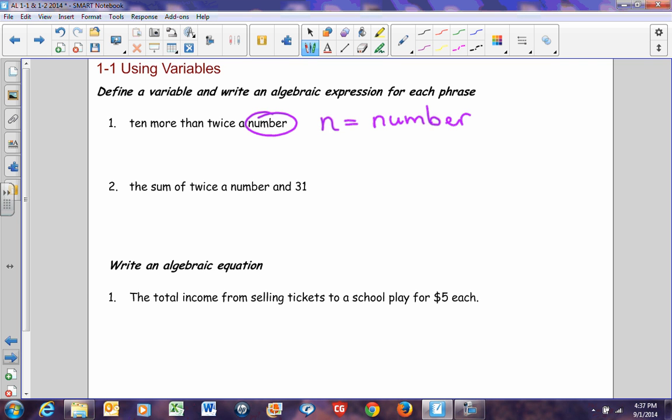So, ten more than twice a number, I'm literally going to just remember that the word more than means twice a number has to come first. This comes first. So, twice a number would be 2n and then ten more than that would be added to ten. So, we have ten more than twice a number.